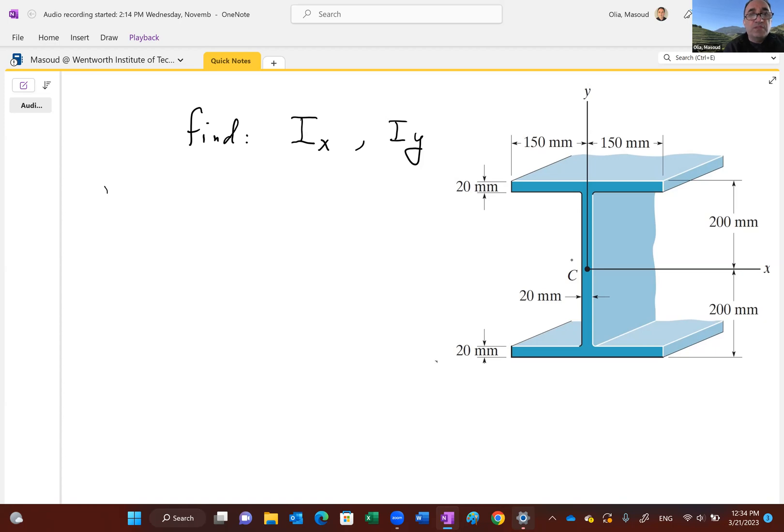Think of this I-beam as a rectangle that has the size of, the width of the flanges is 300 millimeters, as you can see the 150 and 150, right? By what? By 200 from the bottom to the center, another 200. So this is a 300 by 400.